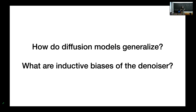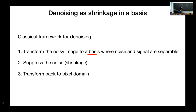How is it that the neural network can enter this generalization regime with finite data — and with a really small dataset compared to what the curse of dimensionality would require? There must be strong inductive biases in these networks that lead to early generalization. The question is: what are those inductive biases? To study them, we step back to the classical framework of denoising.